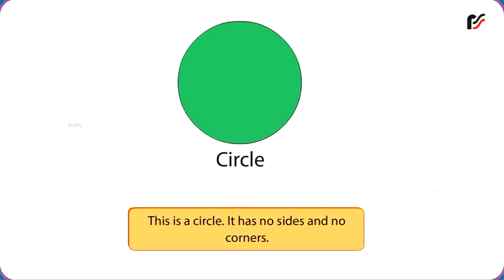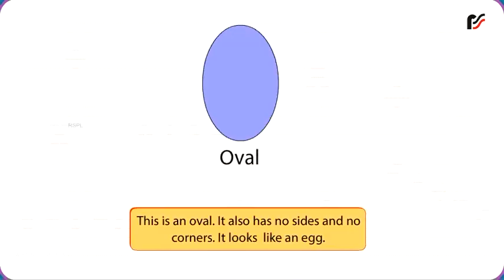Circle. This is a circle. It has no sides and no corners. Oval. This is an oval. It also has no sides and no corners. It looks like an egg.